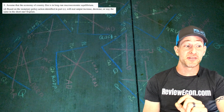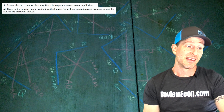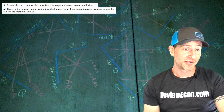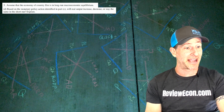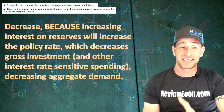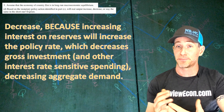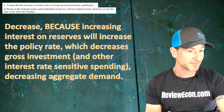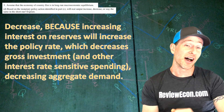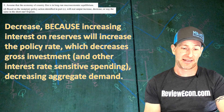Part D: based on that monetary policy, real output will decrease. Increasing interest on reserves will increase the policy rate, which decreases gross investment and other interest rate sensitive spending, which then decreases aggregate demand.